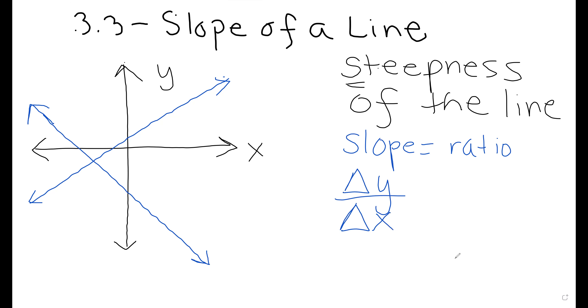The delta symbol means change. In mathematics, we use the variable m to indicate the slope.